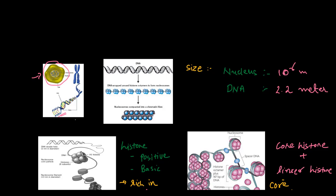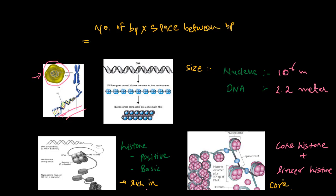So the DNA needs to be packed inside the nucleus to compensate for the size difference. You can calculate the size of DNA based on the number of base pairs multiplied by the space between them. In the mammalian cell, the number of base pairs is 6.6 into 10 raised to 9 base pairs.